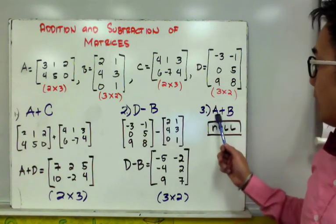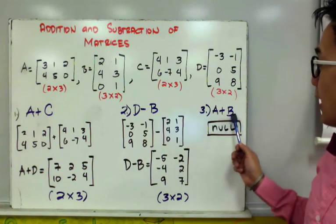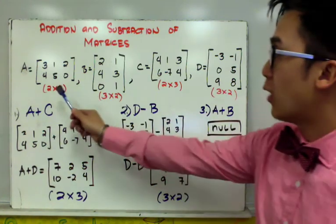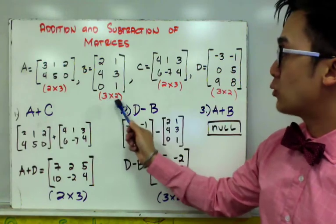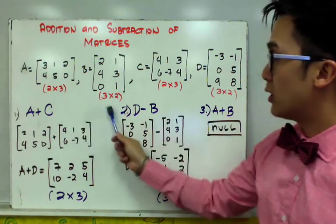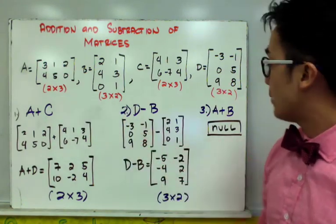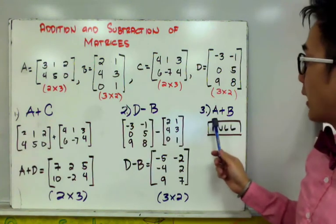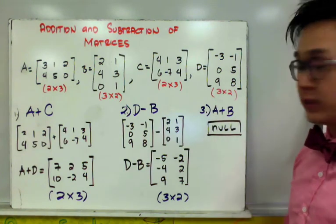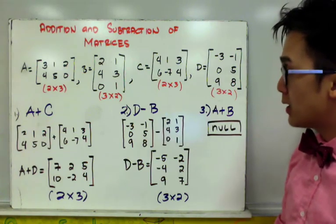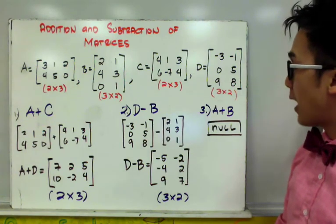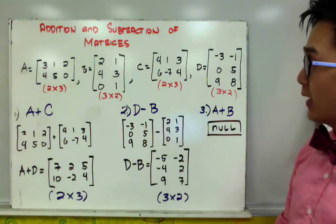And for example number 3, if we're going to add A or matrix A and matrix B, which we know is a 2 by 3 to be added to a 3 by 2 matrix, since their order is not the same, it is impossible to combine A and B through addition. So that means A plus B is a null matrix, or an empty matrix, because it's not possible to combine A and B by addition.